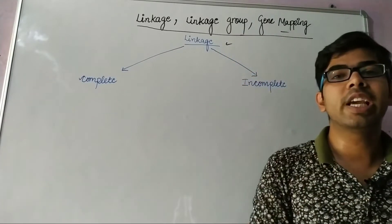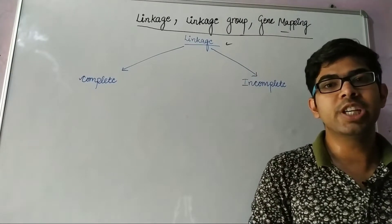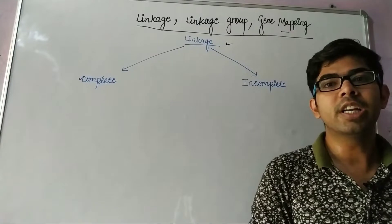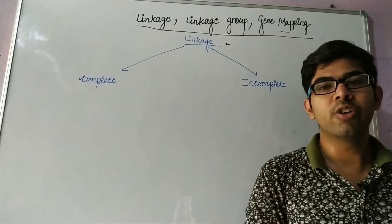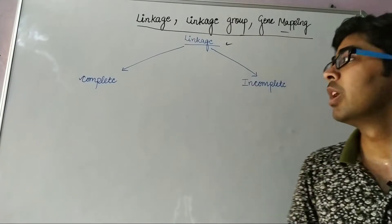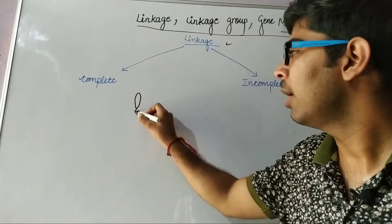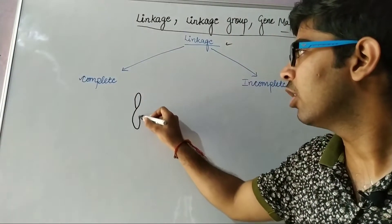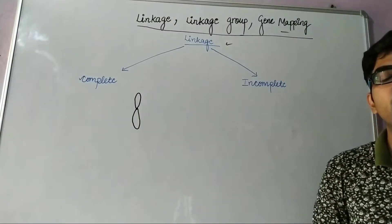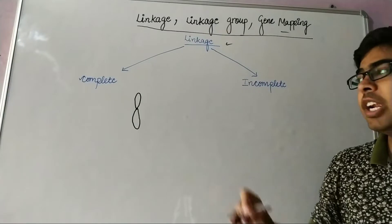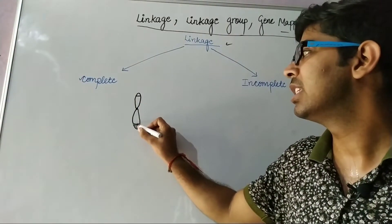What is linkage? Linkage is the tendency of two genes to stay together during the process of meiosis or during gamete formation. The further the genes are present on a chromosome, the lower the chances of two genes to stay together, and there is less linkage.